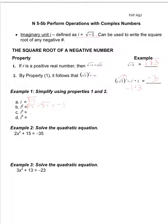For i cubed, we have the square root of negative 1 times itself three times. We know the first two multiply to negative 1, and then we multiply by the square root of negative 1 again, giving us negative i. For i to the fourth, we pair the four square roots of negative 1 into two groups — each pair gives negative 1 — and negative 1 times negative 1 equals positive 1.